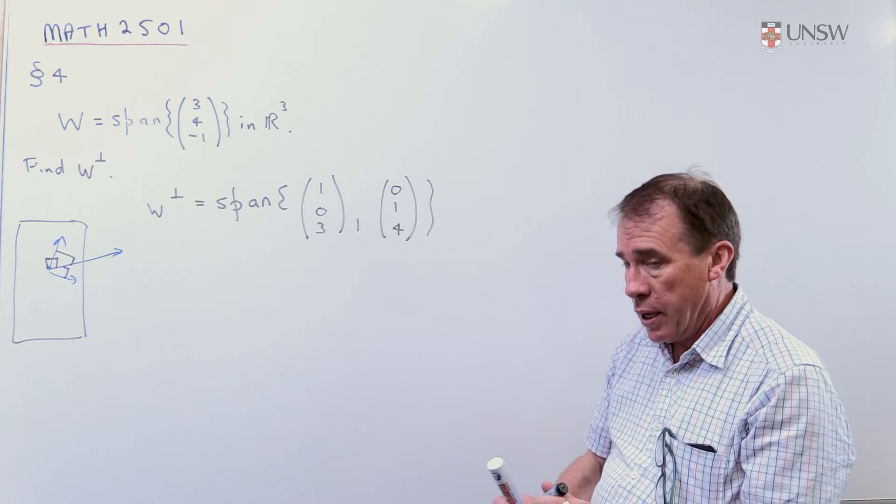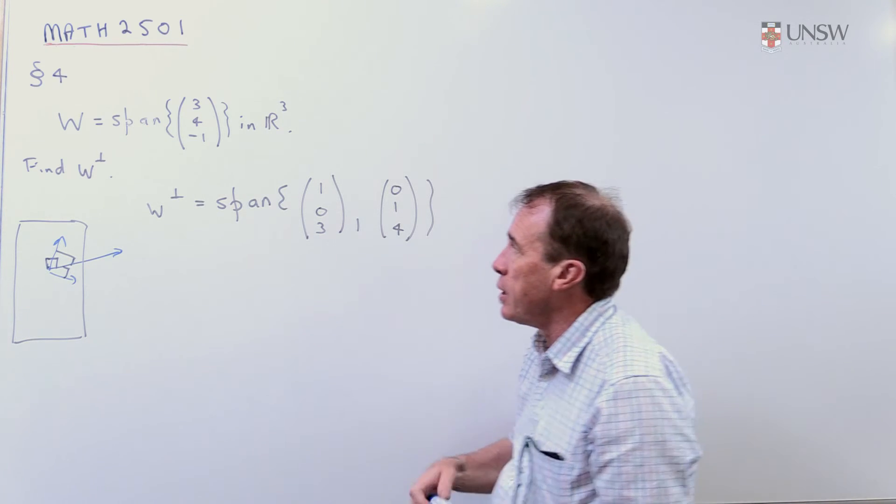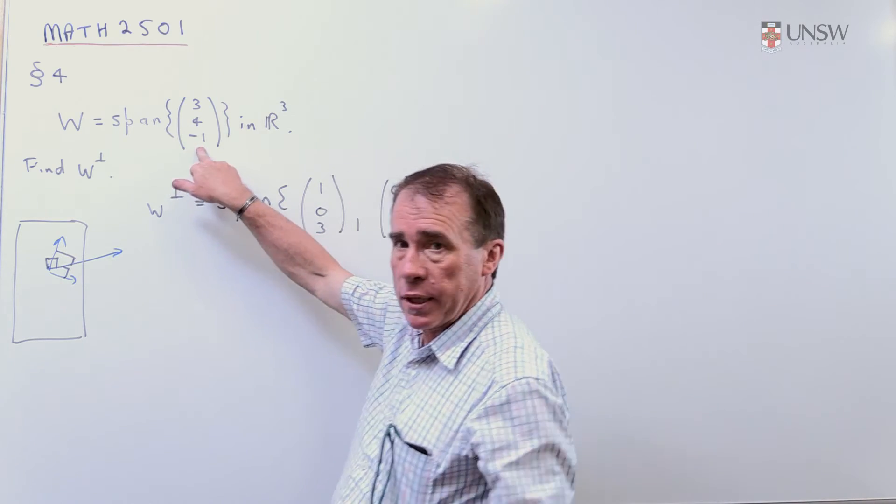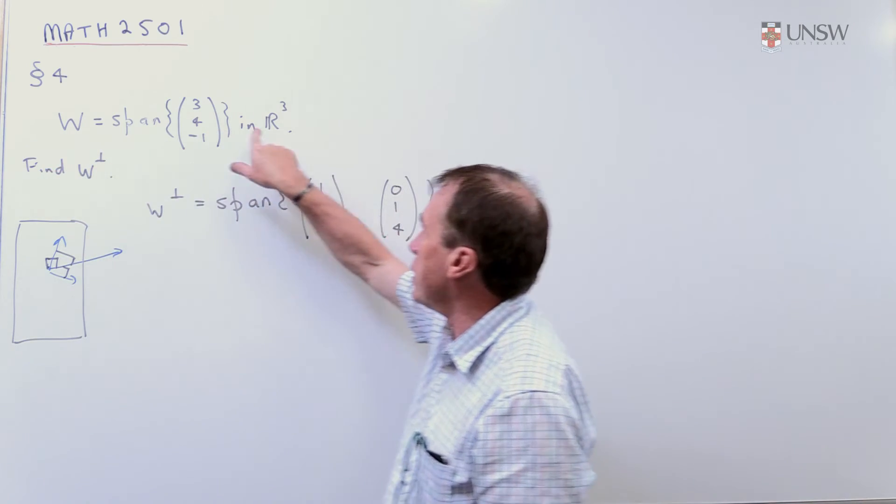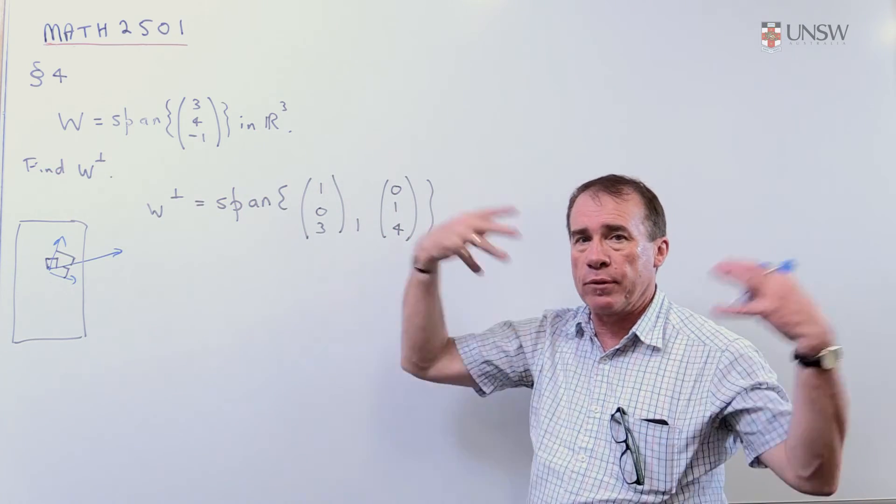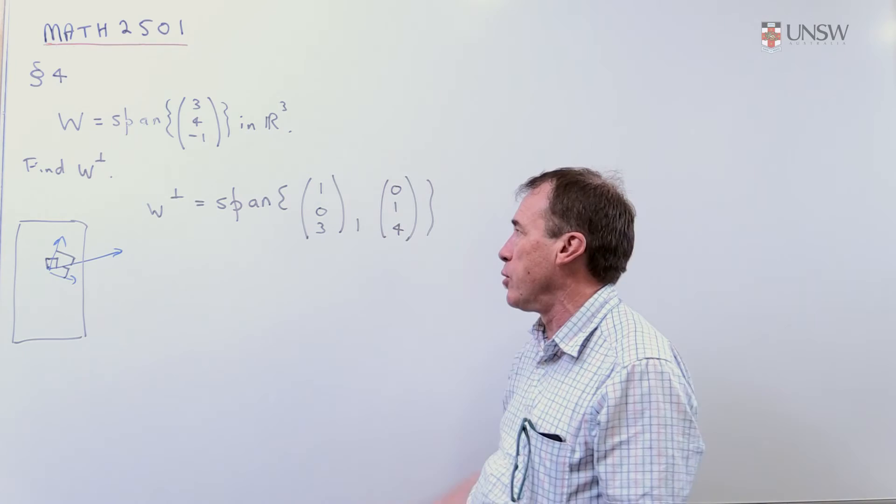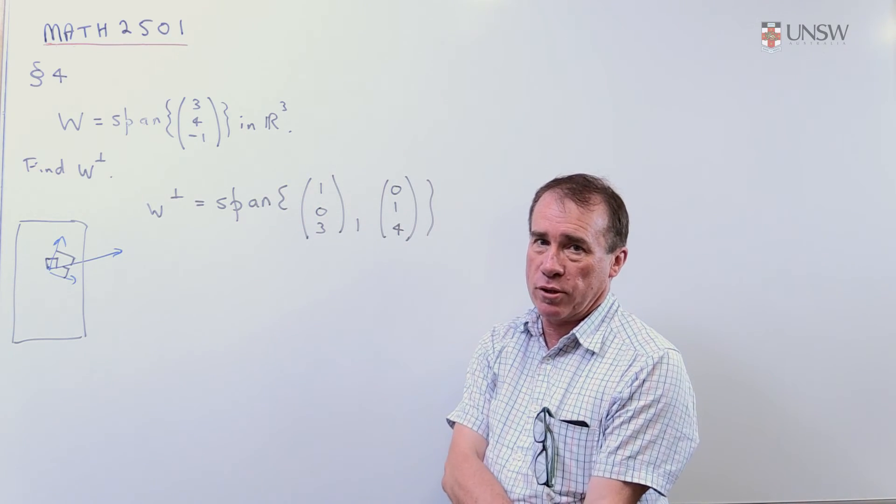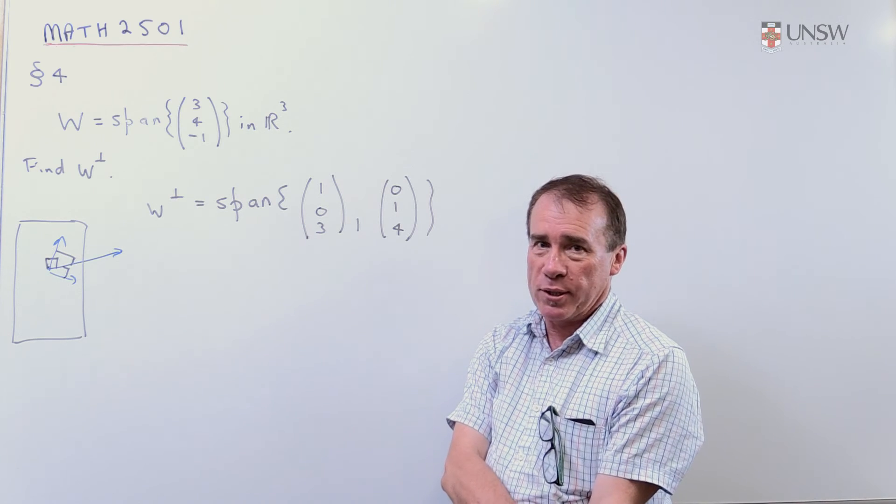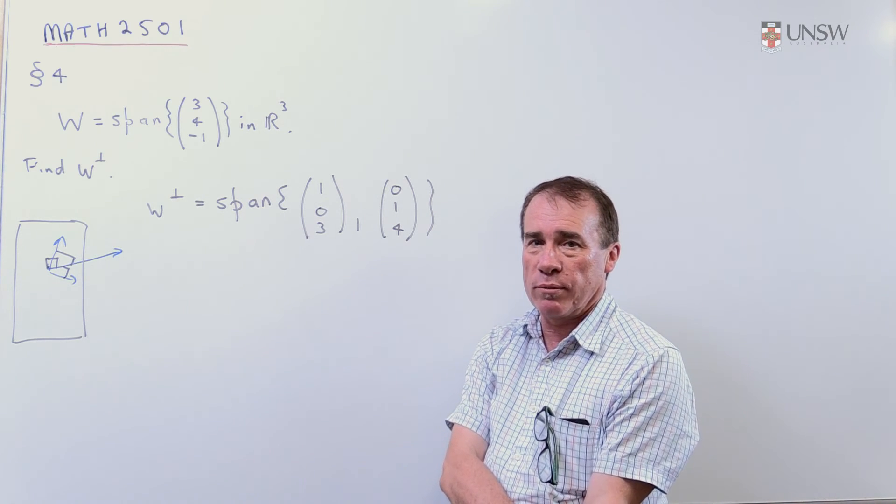Notice that, again, think about dimensions. The dimension of this line is one dimensional, so that means the dimension of the perpendicular space in R³ has to make up the rest of the space. So it's got to be two dimensional. And of course, as we see, the perpendicular space is two dimensional. Think about these ideas as you're doing all of these problems.